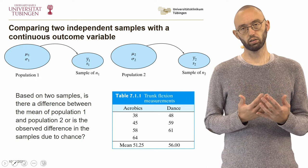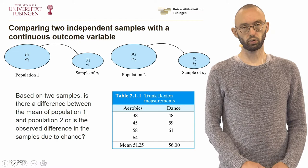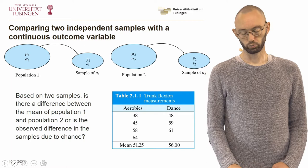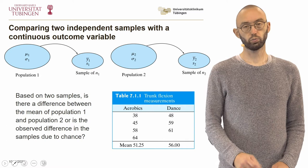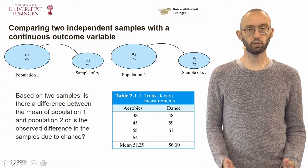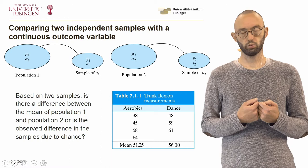Let's take an example. We are interested in the flexibility of the trunk of two groups: people who do aerobics and people who dance. We have fairly small sample sizes here, just four samples in each group. On average, the aerobics group can flex their trunk by 51 degrees and the dance group by 56 degrees. This difference is not particularly big, but the observed difference in sample means may not reflect a true difference in population means — it could merely be due to the chance element of the sampling process.